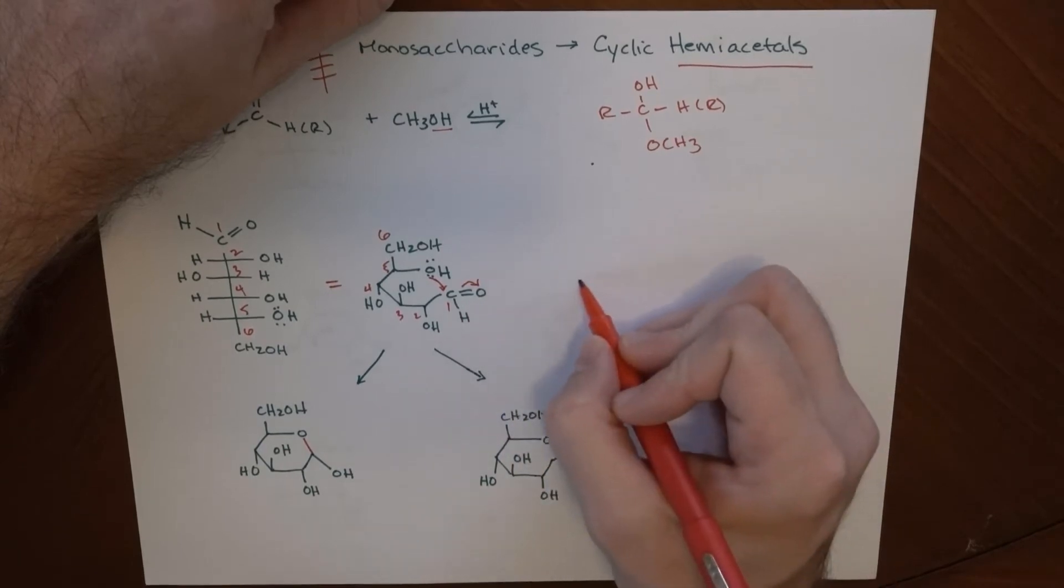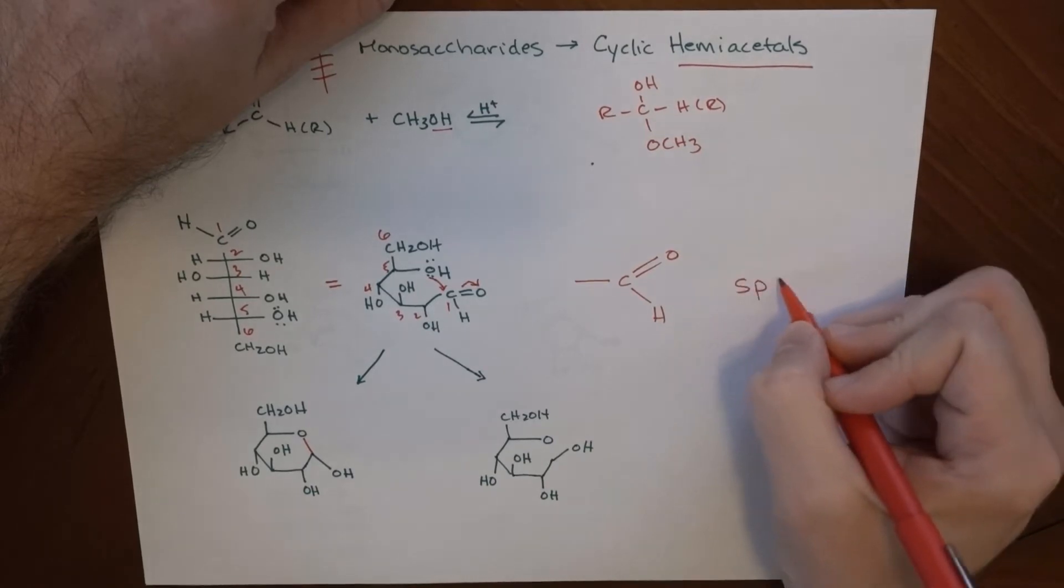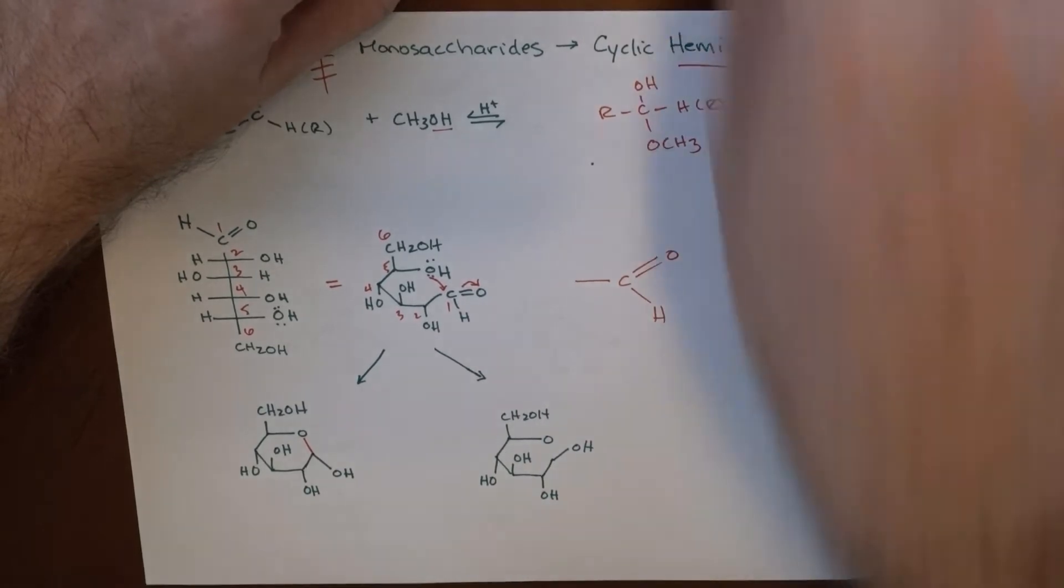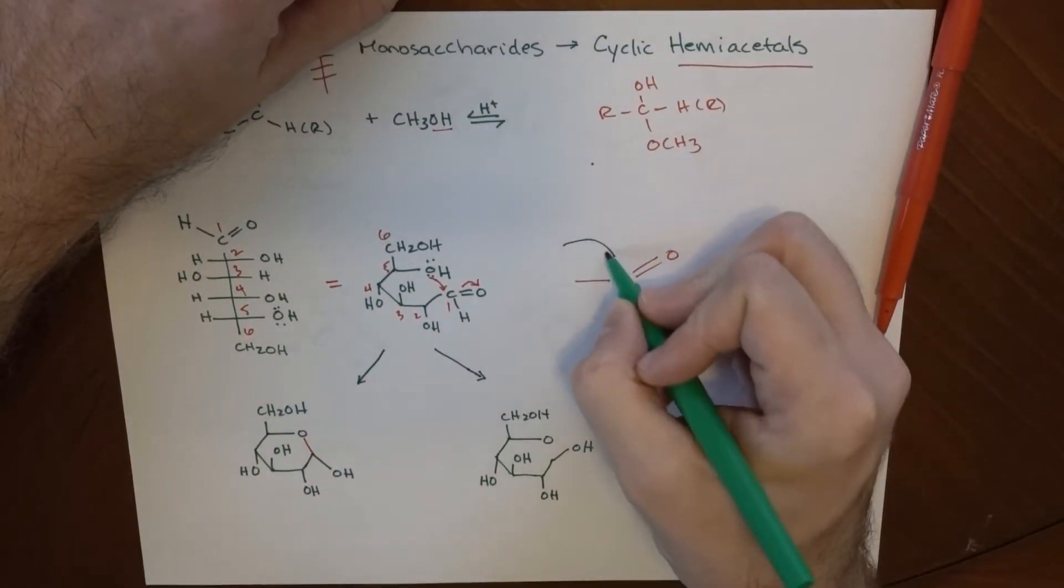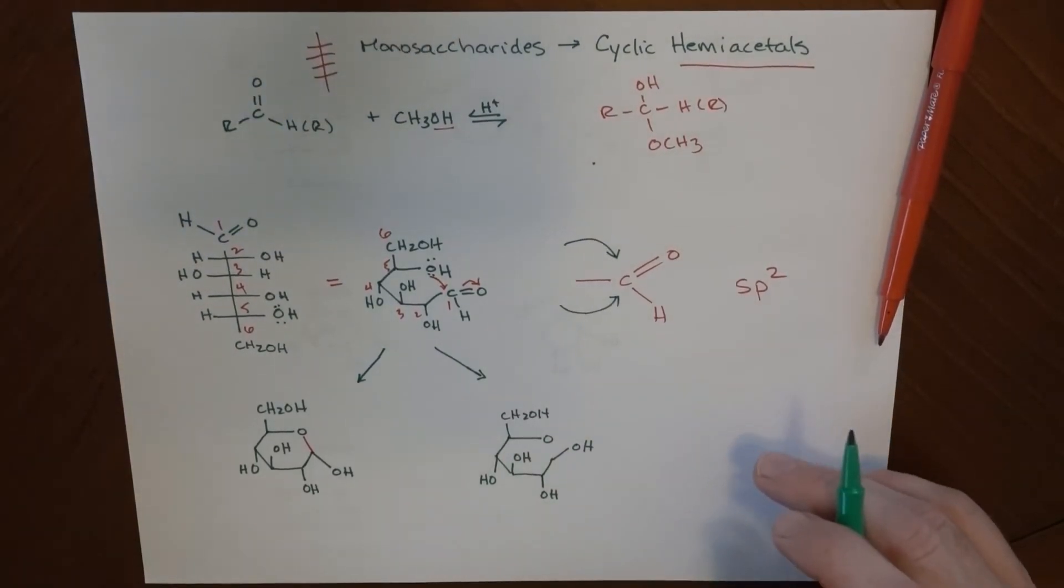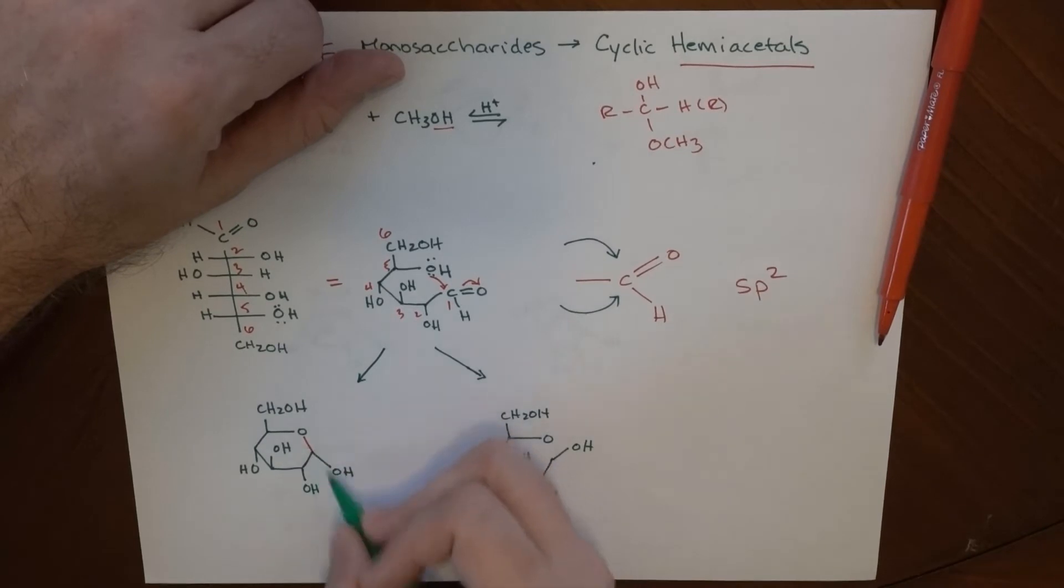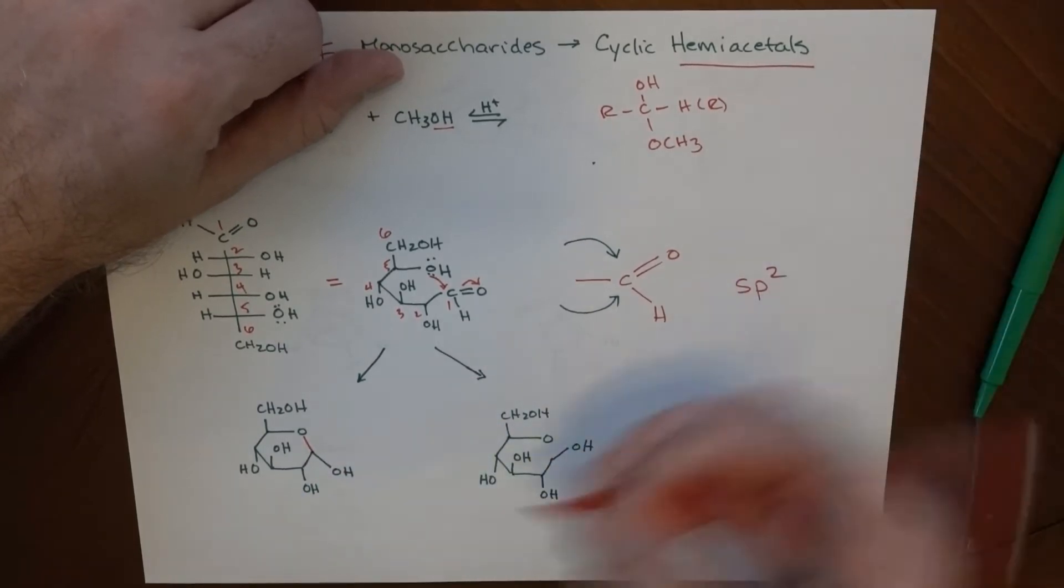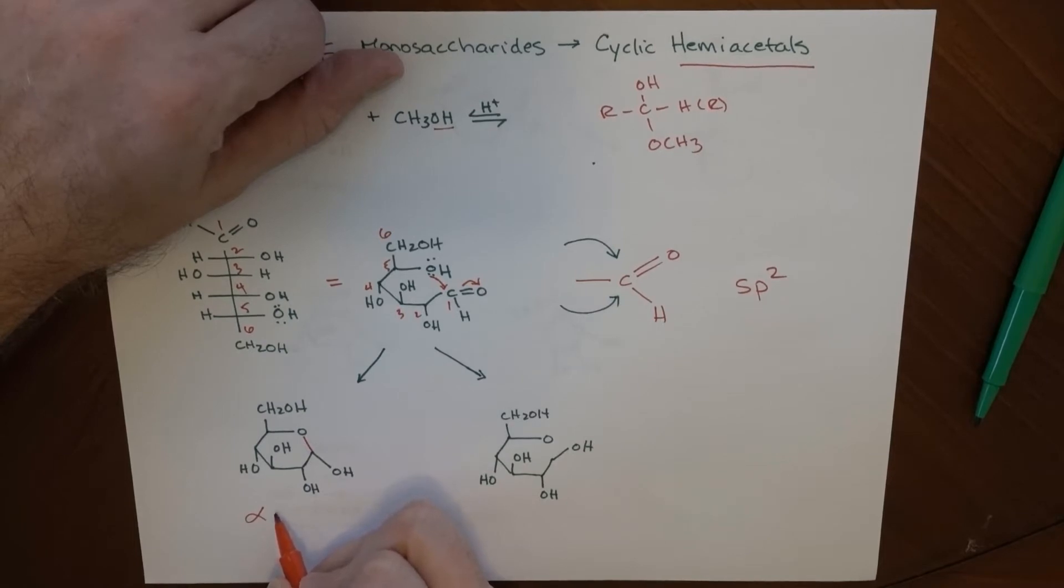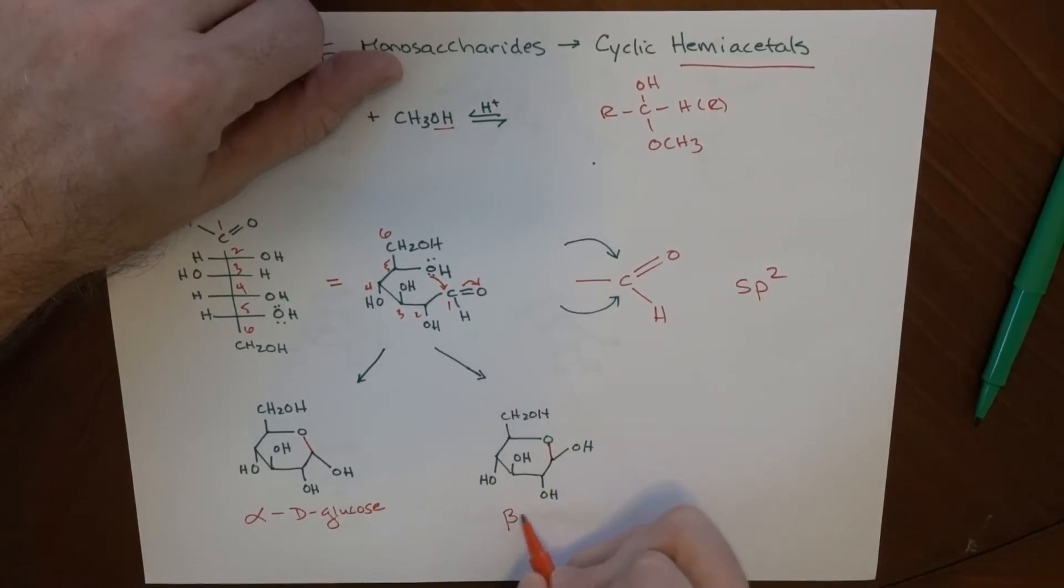Here's the important thing. This carbonyl group here is flat and planar. It's sp2 hybridized. That means that when this oxygen attacks, it can attack from one side or the other side. And when it attacks in such a way that the OH, or the new OH that ends up being formed, is sort of below this plane, what we end up getting is an alpha projection for this. So this would be considered alpha-D-glucose. And this, because the OH is above, meaning that this attack came from below, the new bond we form is here, and this would be considered beta-D-glucose.